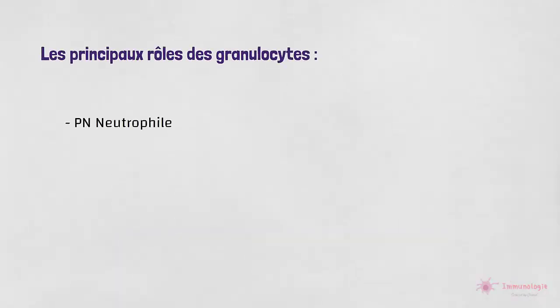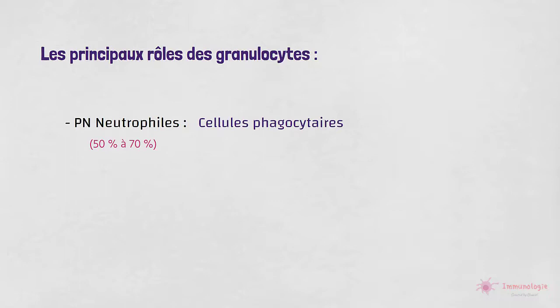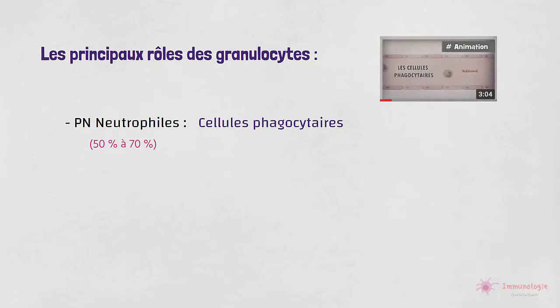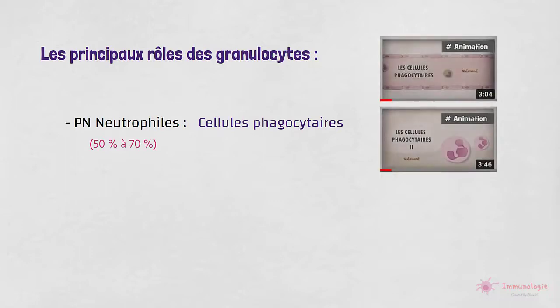Les neutrophiles constituent la majorité des leucocytes circulant chez l'homme adulte et sont beaucoup plus nombreux que les autres granulocytes. Ces cellules sont abordées dans des vidéos à part entière en tant que cellules phagocytaires.